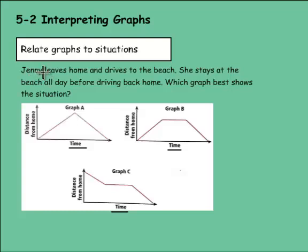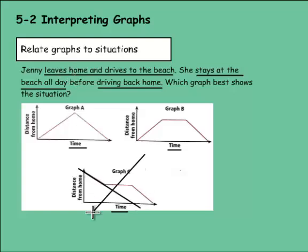Now I'm going to underline important words as I read. Jenny leaves home and drives to the beach. She stays at the beach all day before driving back home. So which graph best shows the situation? Well, first, the graph needs to show me that she's leaving home and driving to the beach. So therefore, she should start at home, which is at the bottom. And then it should show her going farther away from home. This one could work because it's at home and she's going farther away. Same thing for this one. This one I can already rule out. She's not even starting at home here.